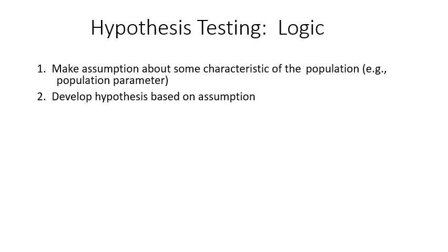We can determine that there's only a 5% chance that the result we got of 20 — meaning it is less than 22 — and the difference between the national average and our sample, there's only a 5% or less chance we got that result just due to random chance, just due to sampling error.